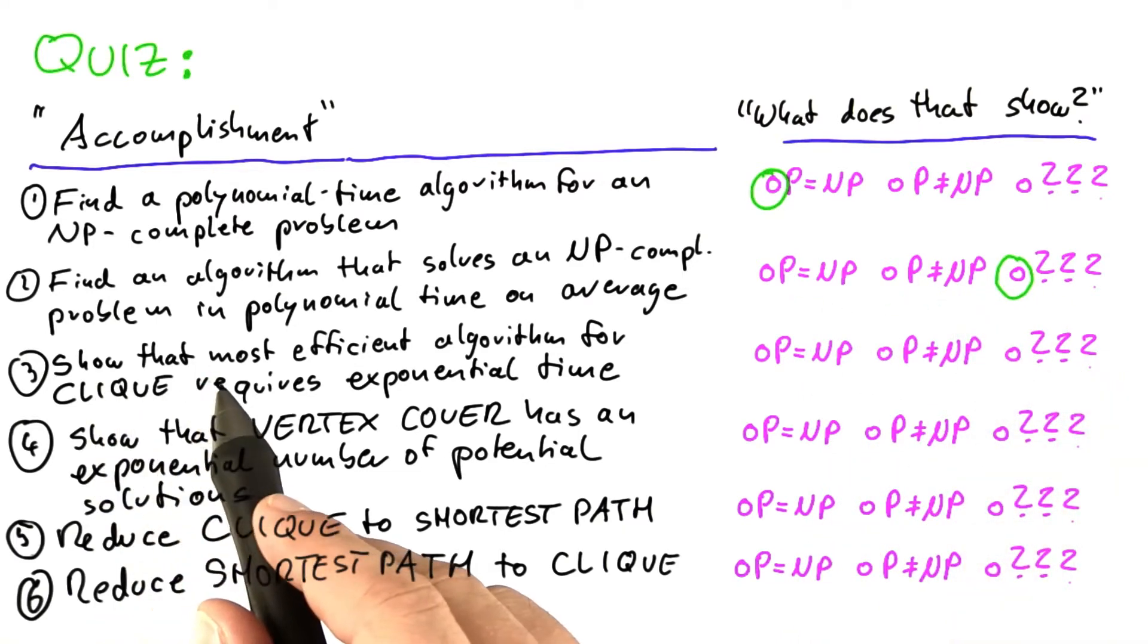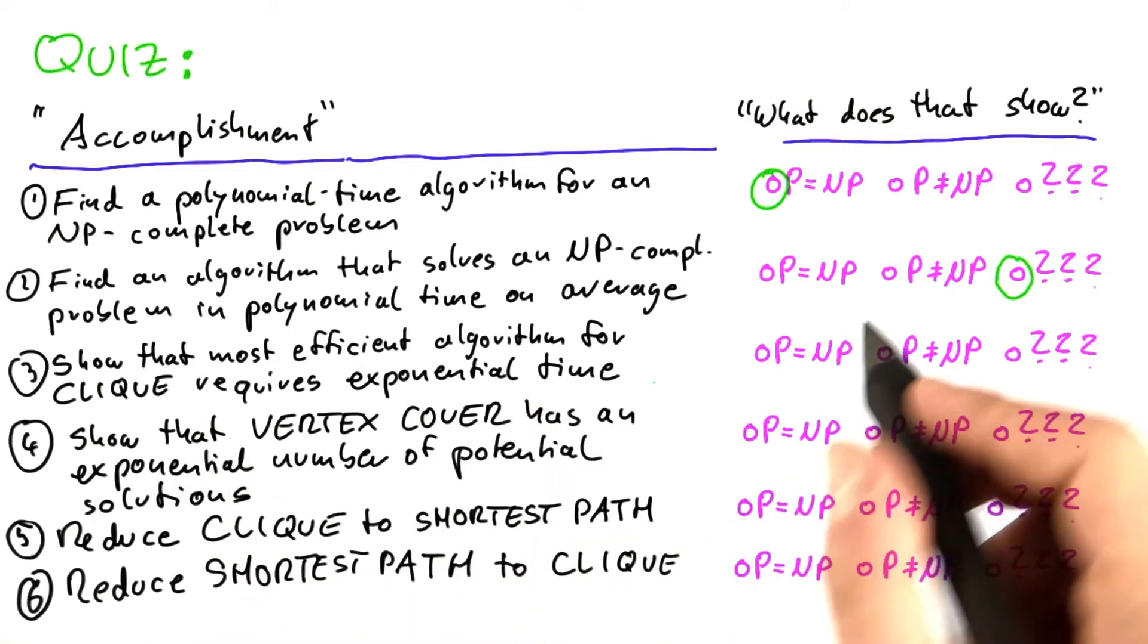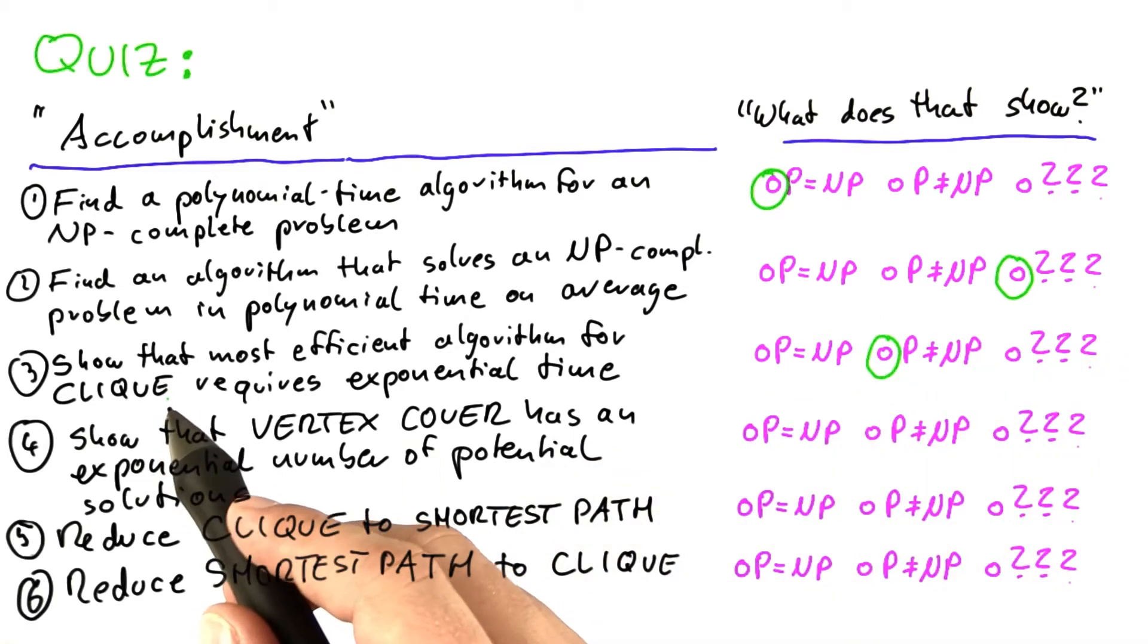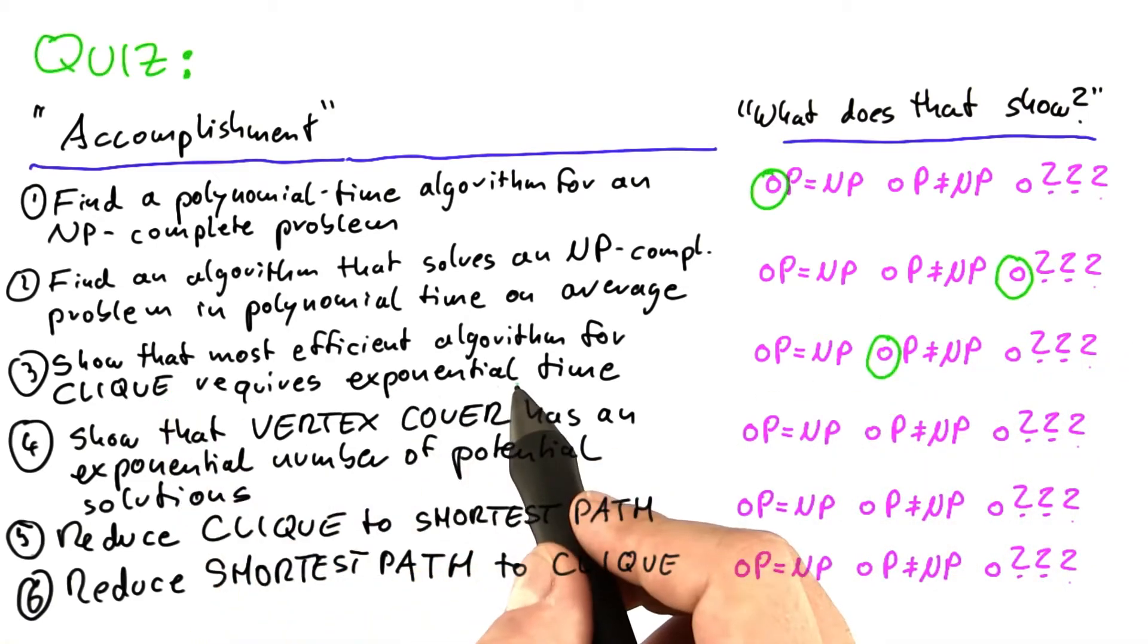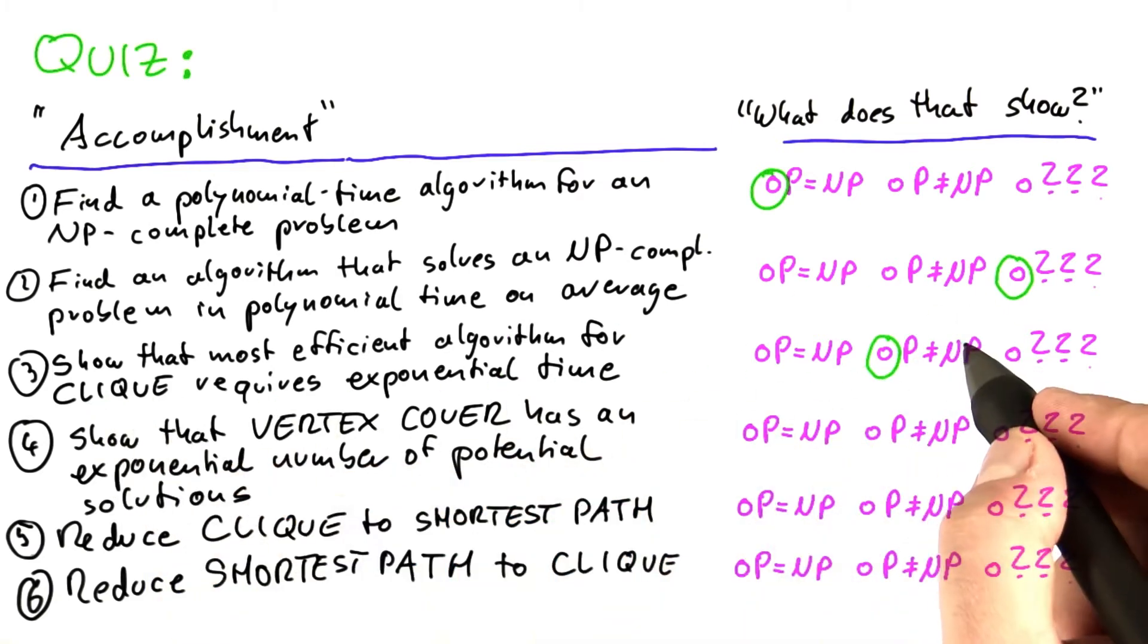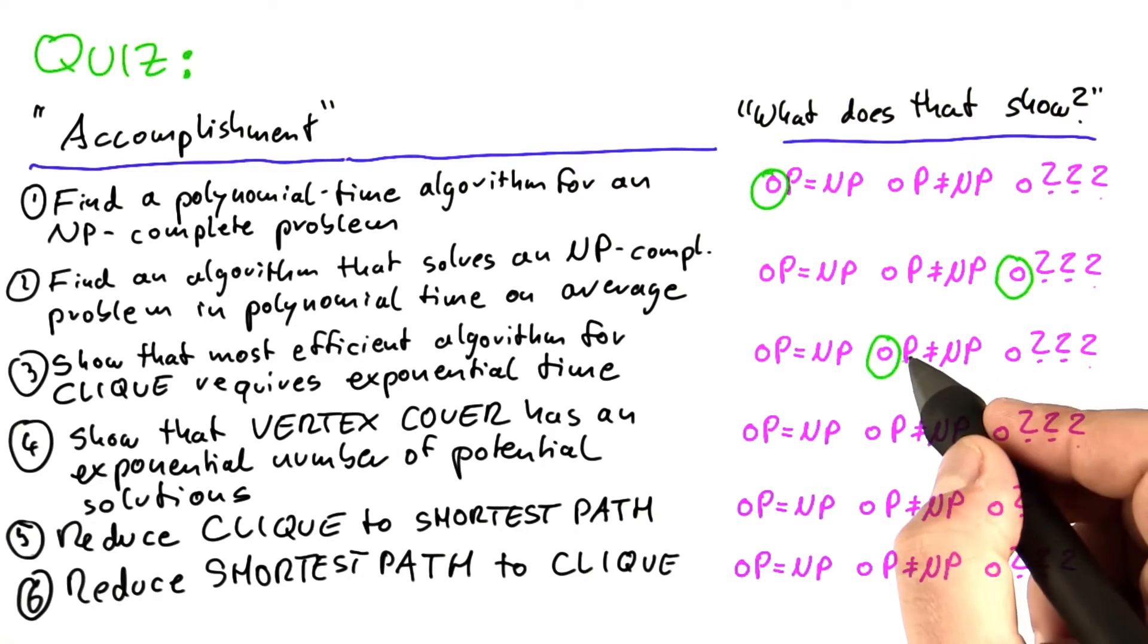Now, showing that the most efficient algorithm for clique requires exponential time, that would show that P does not equal NP because clique is contained in NP. So if it requires exponential time, it means that there's at least one problem, namely clique, that is contained in NP but not in P.